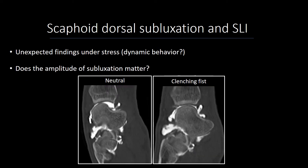When we started looking at dorsal subluxation of the scaphoid dynamically, there were some unexpected findings. In this example, when the wrist was in a neutral position, we can clearly see a dorsal displacement of the scaphoid, but when we asked the same patient to clench the fist, this subluxation was reduced, which was sort of unexpected.